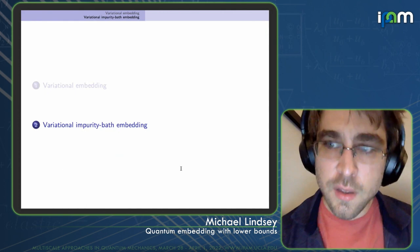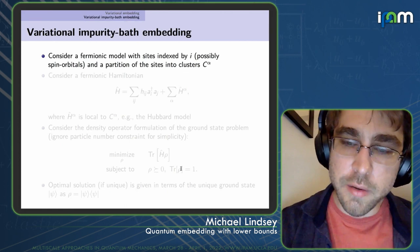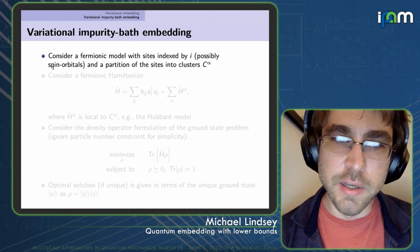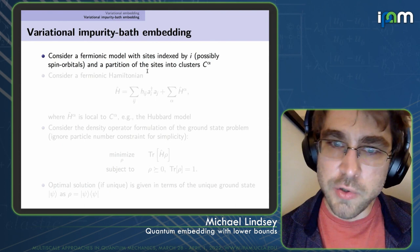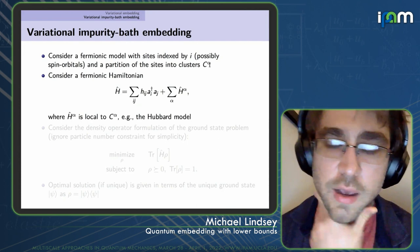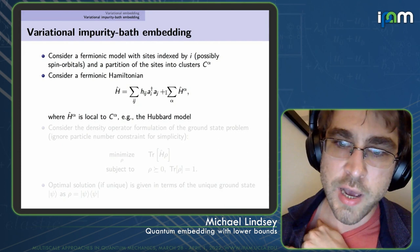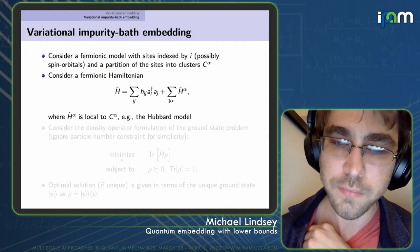The second part of the talk considers only fermionic models, where sites indexed by i could be spin orbitals. Given a partition of sites into clusters C_alpha, we consider Hamiltonians of the form: a general non-interacting term plus a sum of operators local to a single cluster. This covers the Hubbard model if clusters are at least the size of a single spinful site.